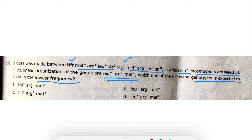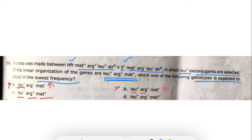The transfer order is leucine first, then arginine, then methionine. Option A: leucine is transferred but not arginine or methionine — transferred at high frequency, so wrong. Option B: leucine is transferred, then arginine, but not methionine — also transferred at high frequency, so wrong.